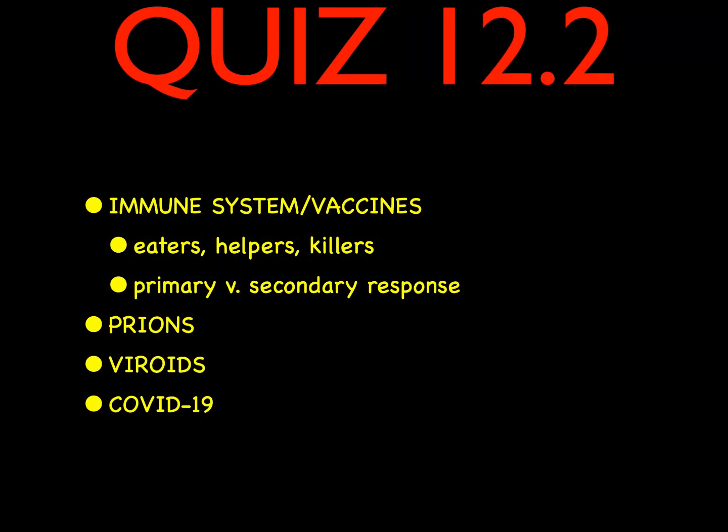For your quiz for section 12.2, you need to know about the immune system and vaccines — the eaters, helpers, and killers; the difference between a primary and secondary response; memory cells; a little bit about prions; a tiny bit on viroids; and the pertinent information on COVID-19. Hope you learned something and have a great day.